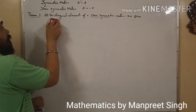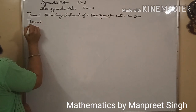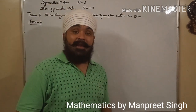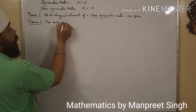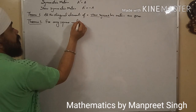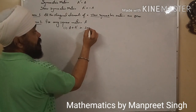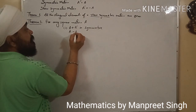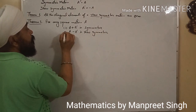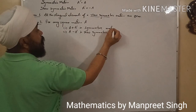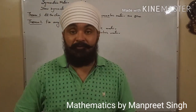Theorem 2 is very important. It states: for any square matrix A, first, A plus A transpose is always symmetric, and second, A minus A transpose is always skew symmetric. This is the theorem and we need to prove both parts.